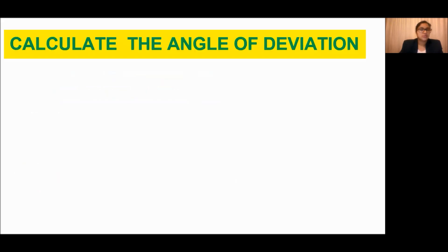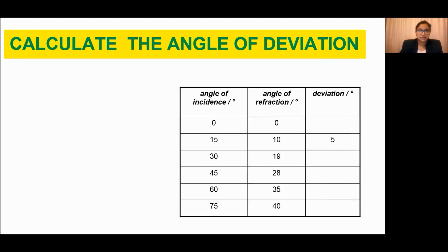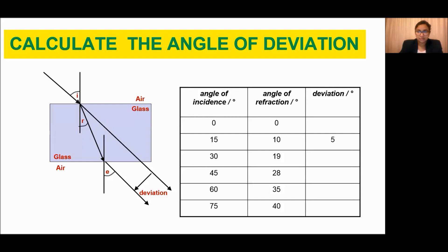Now, using this concept of refraction, let us calculate the angle of deviation. The angle of incidence is given in the table and the angle of deviation is also given. Let us calculate the angle of deviation from this diagram. As we already mentioned, if the incident angle is 0, the refracted angle is also 0. So let us calculate the deviated angle here.